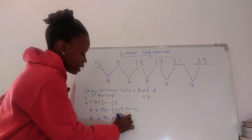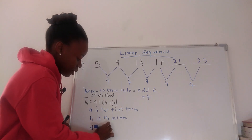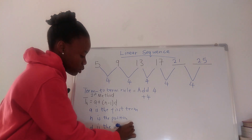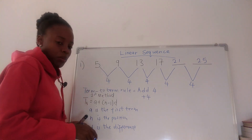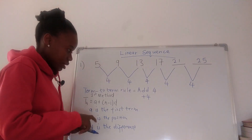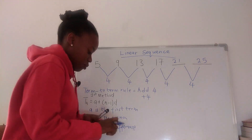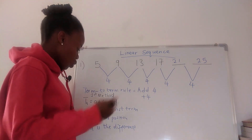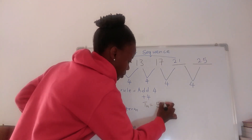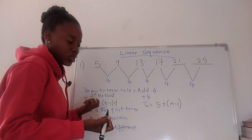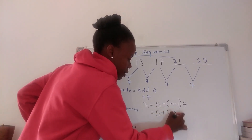Our difference d is positive 4, because from 5 to 9 we added 4. Now let's substitute into the formula. Tn equals 5 plus (n minus 1) times 4. Expanding the bracket, we get 5 plus 4n minus 4.